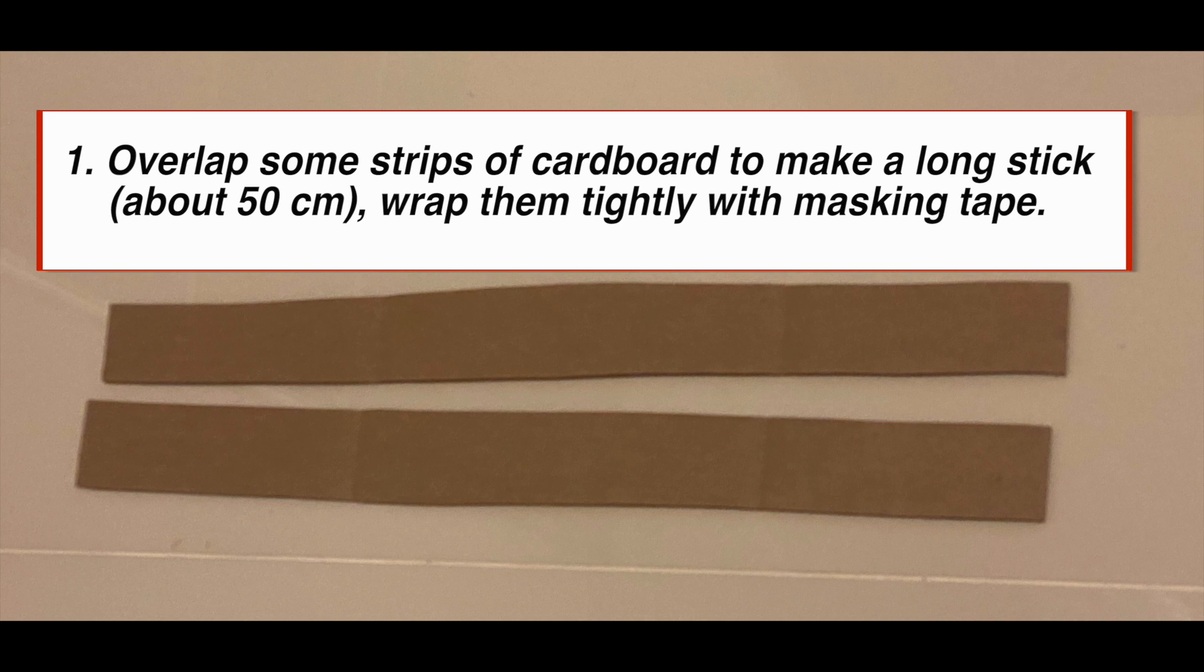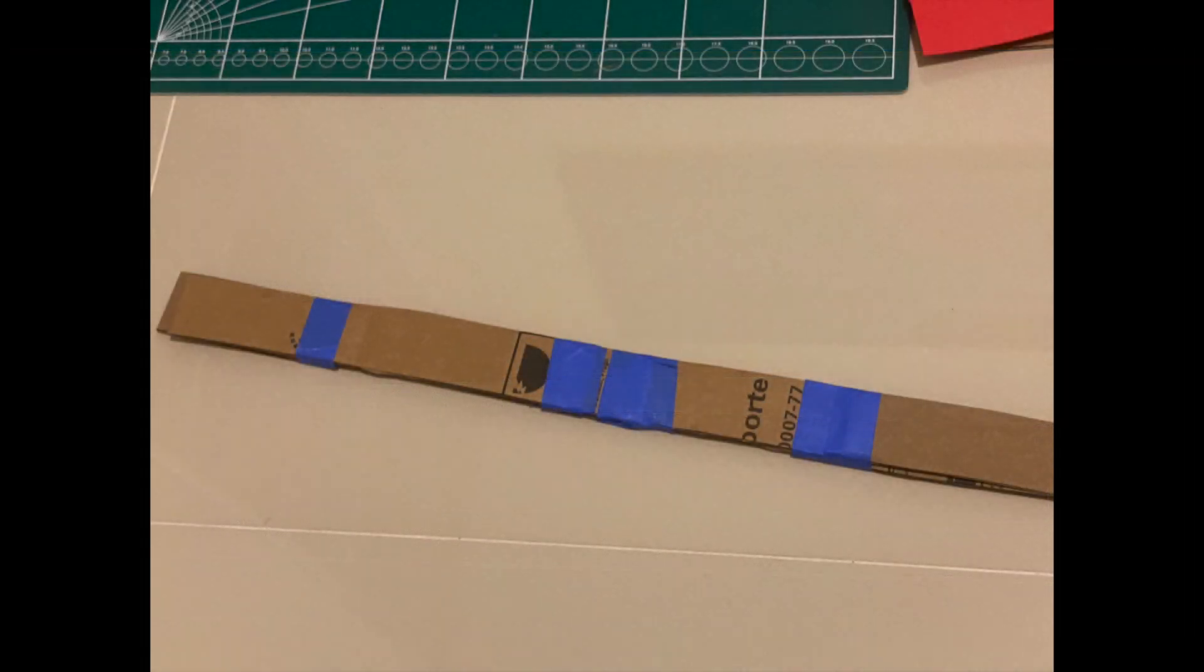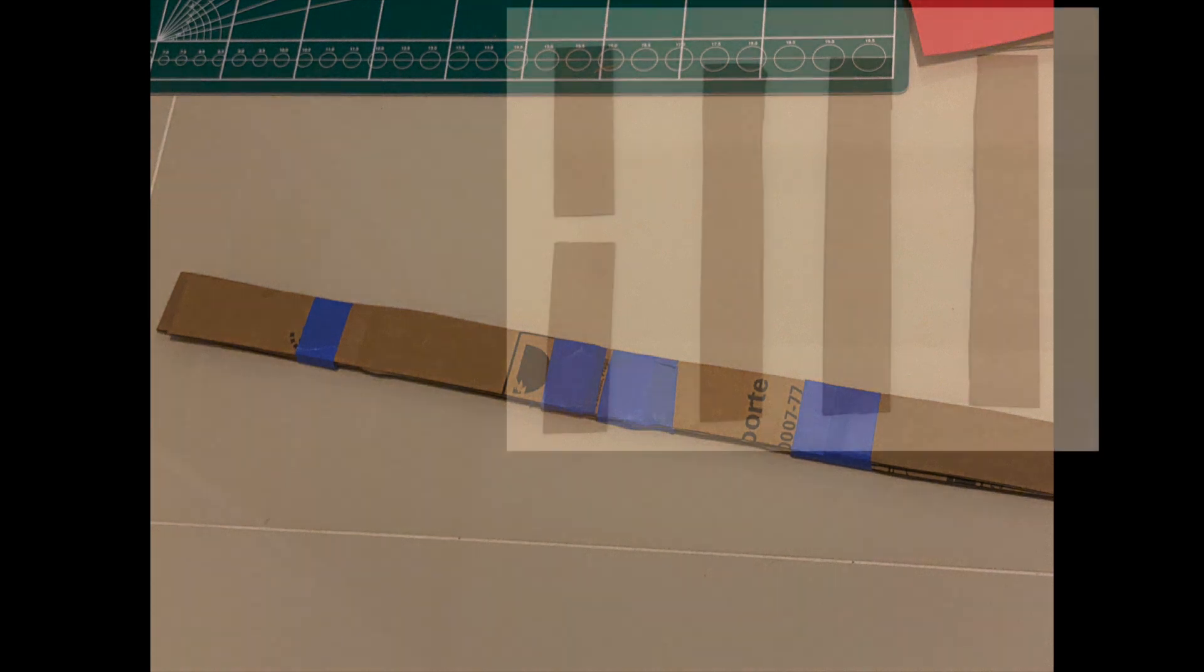Step 1. Overlap some strips of cardboard to make a long stick about 50cm long, wrapping them tightly with masking tape. Your stick should look something like this and it may need to be reinforced further with craft sticks.